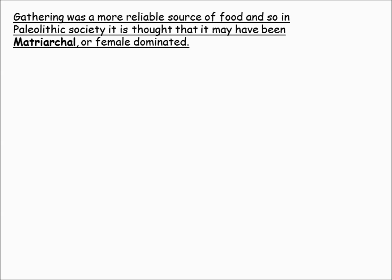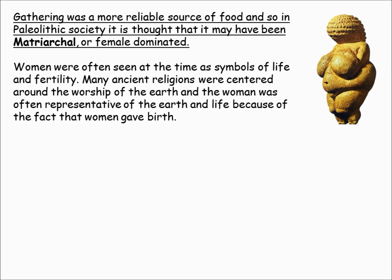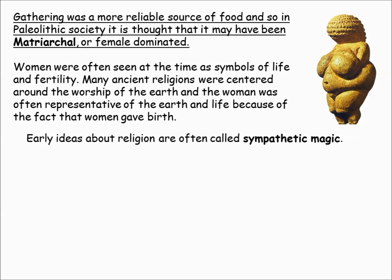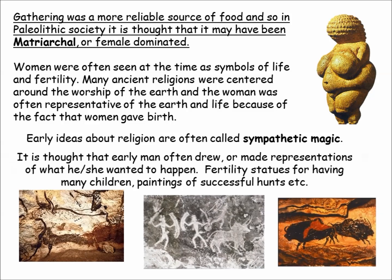One of the first things to understand is that women had more power in some of these societies because gathering was a much more reliable way of getting food than hunting. Many of these cultures or clans worshipped women, both as providers of food and as providers of life through having babies. Many religions centered around women — for example, many societies had women as their chief goddess or earth mother. This is called sympathetic magic, and fertility statues and cave drawings all reflected things of their daily life.